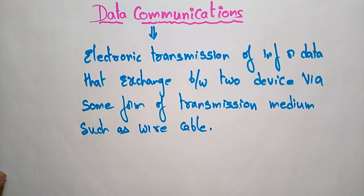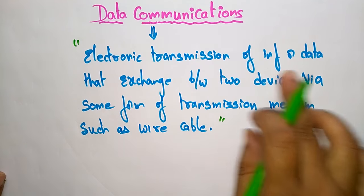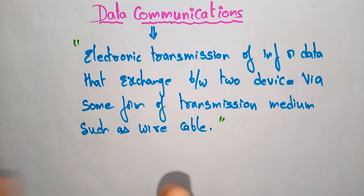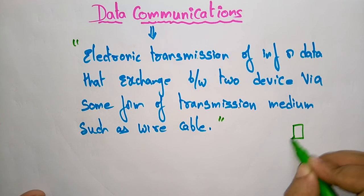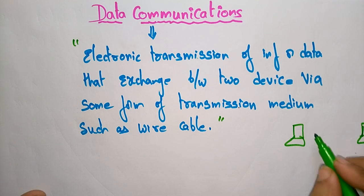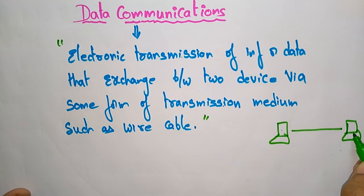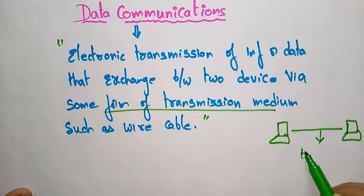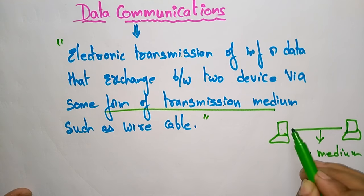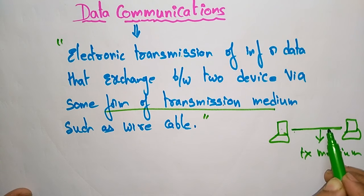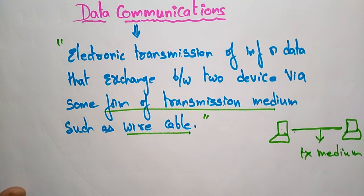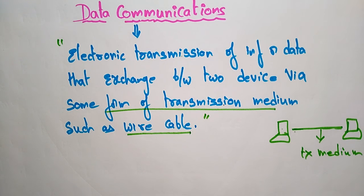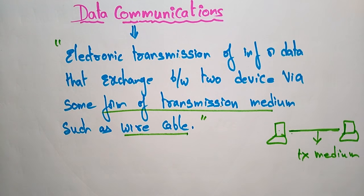Data communication is an electronic transmission of information or data exchanged between two devices or systems via some form of transmission medium. If you want to transmit the data, a medium is required — such as a wire cable, or you can take wireless also. It is a transfer of data from one device to another via some form of transmission media.